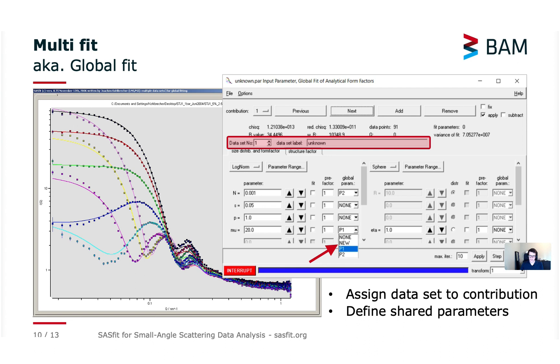This option for global fitting also provides some kind of global parameters within the model setups and this way you can share variables between different models. For example they can share the same contrast value or you can even fit a certain shared parameter which exists in multiple models. As you can see this can get really complex quickly but this is also some kind of versatility the SASFIT program provides.